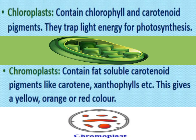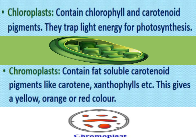Chloroplasts contain chlorophyll and carotenoid pigments. Based on the name chlorophyll, it is called chloroplast. Along with chlorophyll, it also has carotenoids. These trap light energy for photosynthesis — that is the function of chlorophyll present in chloroplasts.